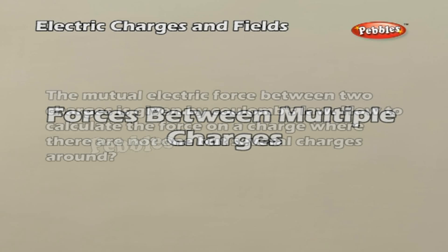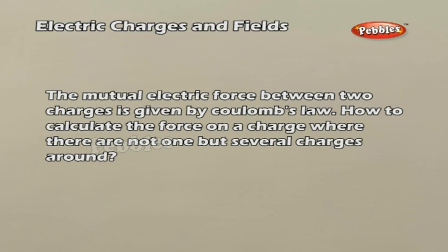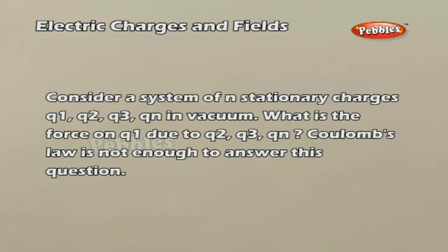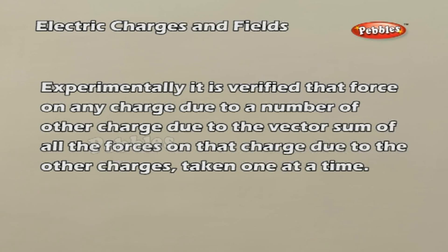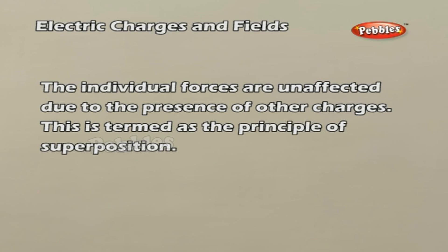Forces Between Multiple Charges. The mutual electric force between two charges is given by Coulomb's law. To calculate the force on a charge where there are several charges around, consider a system of n stationary charges Q1, Q2, Q3, and so on till Qn in vacuum. Experimentally, it is verified that the force on any charge due to a number of other charges is the vector sum of all the forces on that charge due to the other charges taken one at a time. The individual forces are unaffected by the presence of other charges. This is termed the principle of superposition.